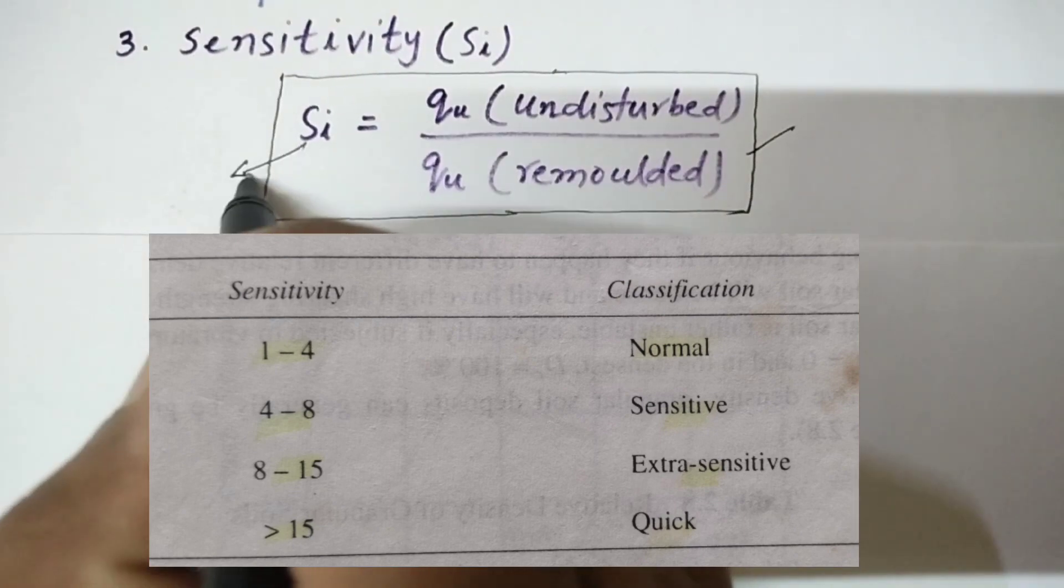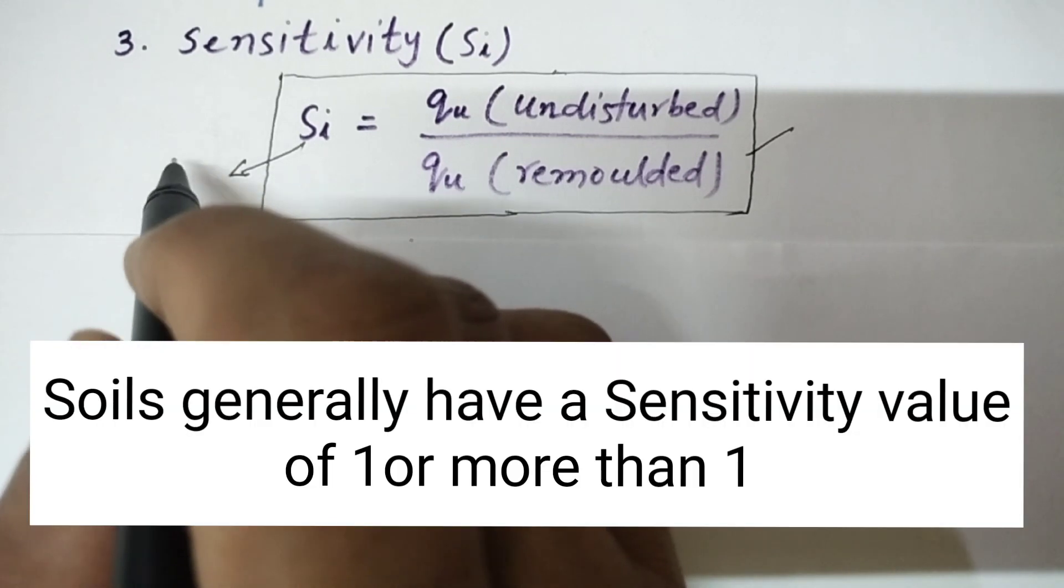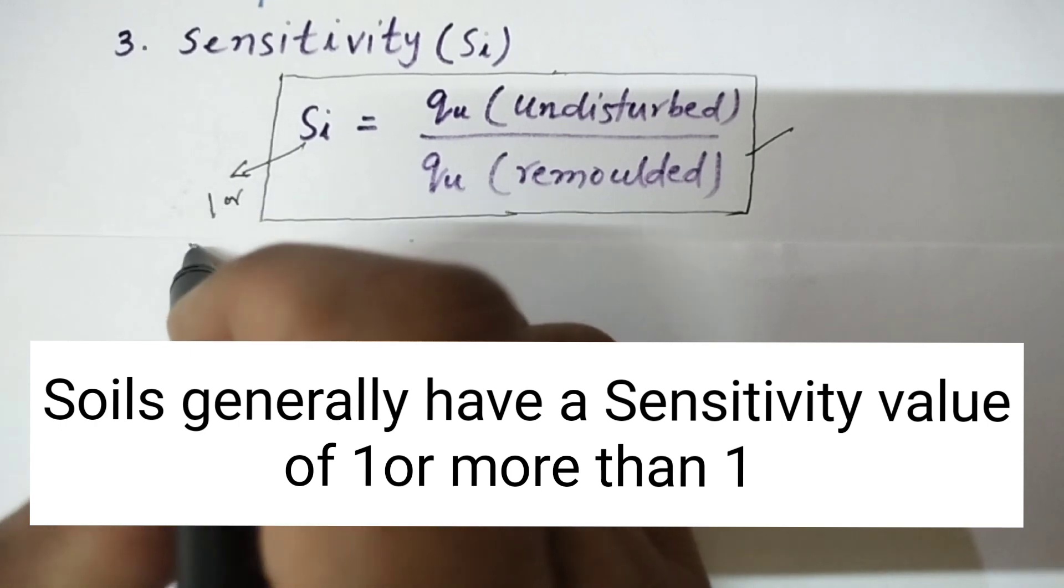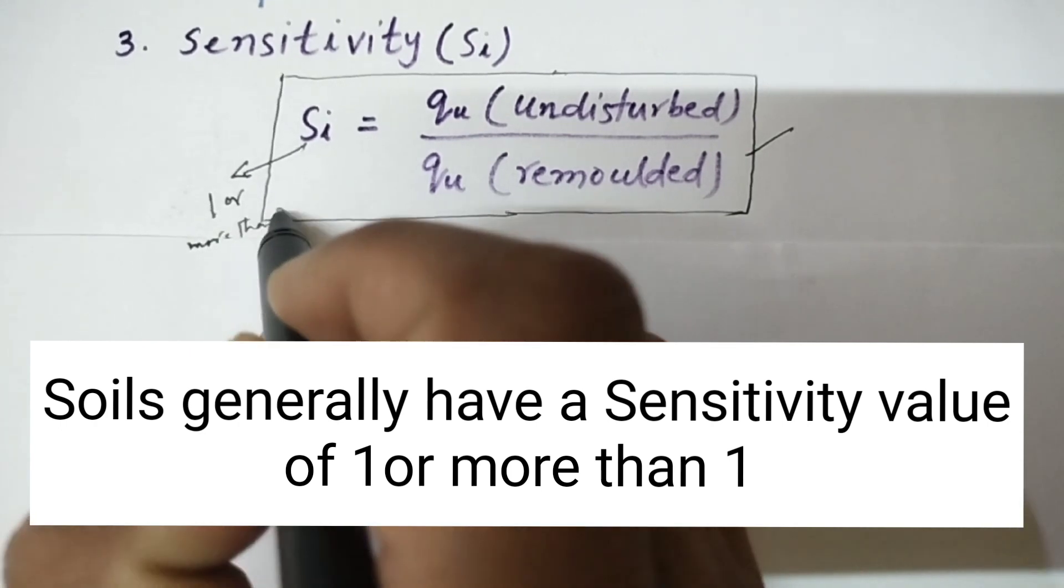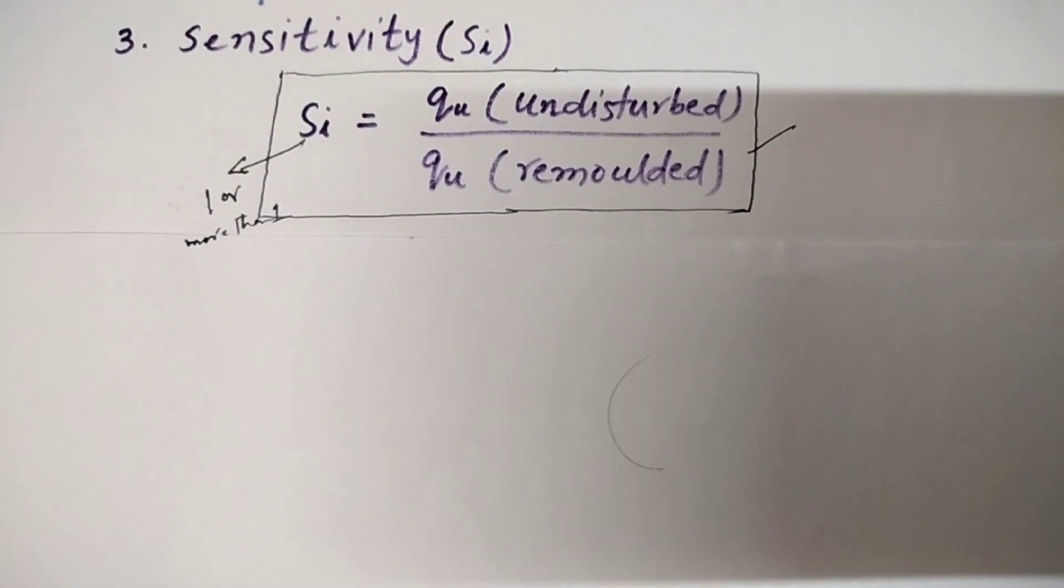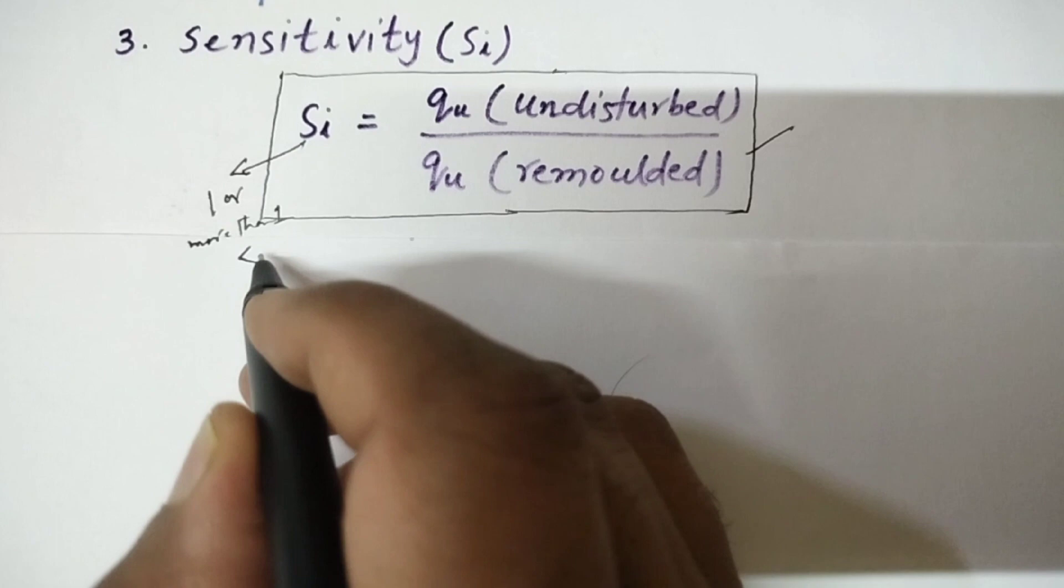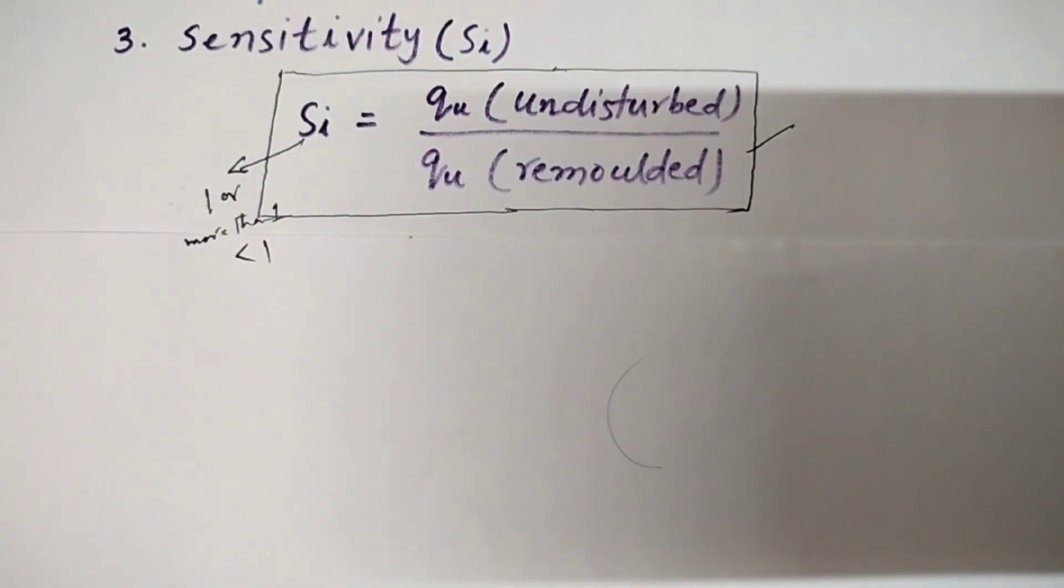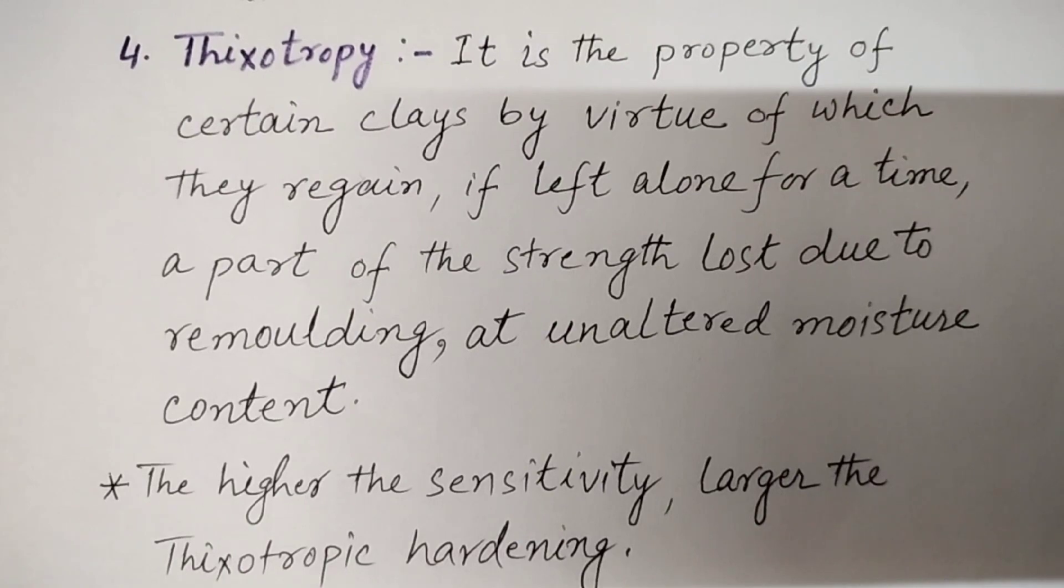As indicated, the soil generally have sensitivity value of 1 or more than 1. However, stiff clays having fissures and cracks sometimes exhibit a sensitivity value less than 1, since these weaknesses present in an undisturbed sample will be removed upon remolding.